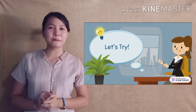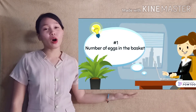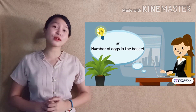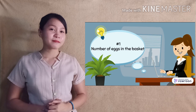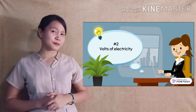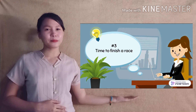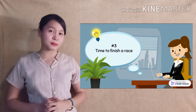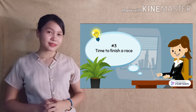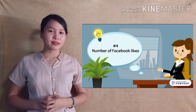Now I think we are ready to try. Let us answer: discrete or continuous. Number 1: Number of eggs in the basket. Is it discrete or continuous? You're right, it's discrete. Number 2: Volts of electricity. Is it discrete or continuous? Yes, it's continuous. Number 3: Time to finish a race. Is it discrete or continuous? Yes, again, it's continuous. And lastly, number 4: Number of Facebook likes. Discrete or continuous? It's discrete. Great job, students!